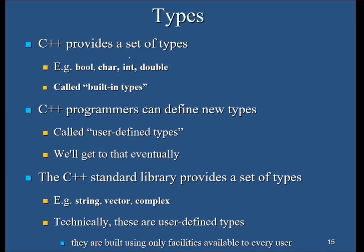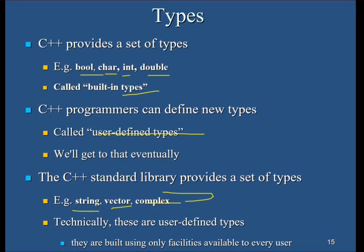C++ provides built-in types: boolean, character, integer, and double. C++ programmers can also define new types called user-defined types, which we'll cover in coming sessions. The C++ standard library provides types like string, vector, and complex — technically these are user-defined types but built using facilities available to every user.